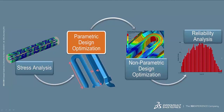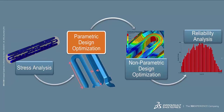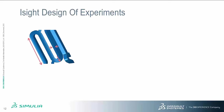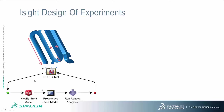Now we are going to talk about how to optimize the shape of the stent — specifically the geometric parameters such as the length, the U-shape, and the thickness of the stent. The parametric design optimization was done using iSight, a process automation and optimization tool from Simulia. A design of experiment was set up in which the parameters were the length of the strut, the radius of the strut, and the thickness of the strut.